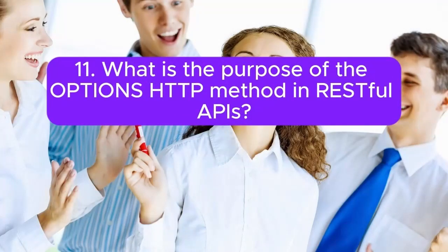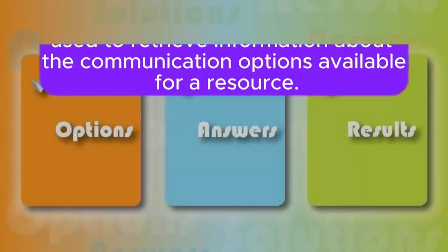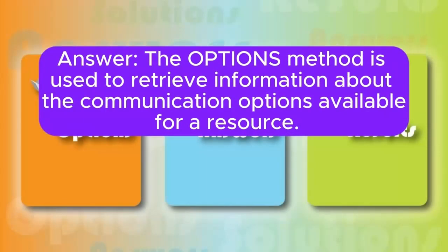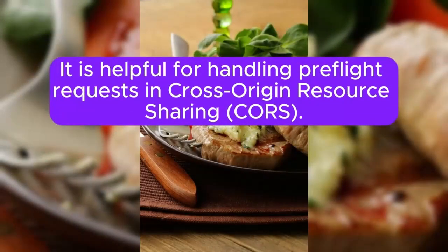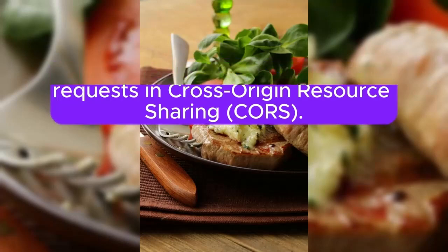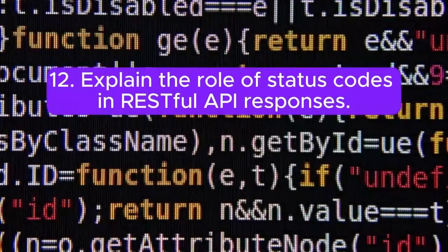Question 11: What is the purpose of the OPTIONS HTTP method in RESTful APIs? The OPTIONS method is used to retrieve information about the communication options available for a resource. It is helpful for handling pre-flight requests and Cross-Origin Resource Sharing (CORS).